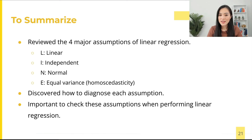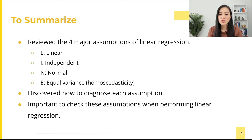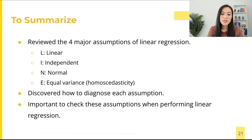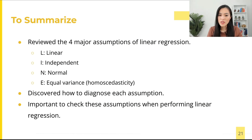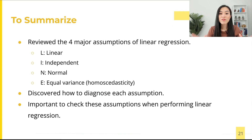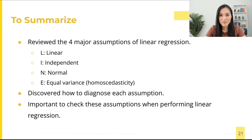All right, let's summarize what we have learned. We revealed the four major assumptions of linear regression, easily remembered using the acronym LINE. The first two assumptions — linear relationship and independence — are critical, and the last two — normality and equal variance — are less important. We also discovered how to diagnose each assumption. It's important to check these assumptions when performing linear regression. I'll see you in the next lesson.